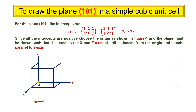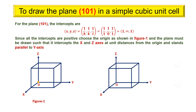For the plane (1 0 1), the intercepts are x, y, z equals 1, infinity, 1. Since all the intercepts are positive, choose the origin as shown in figure 1. Then draw the plane such that it intercepts the x and z axes at unit distances from the origin and stands parallel to y-axis.